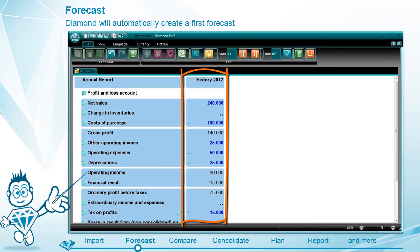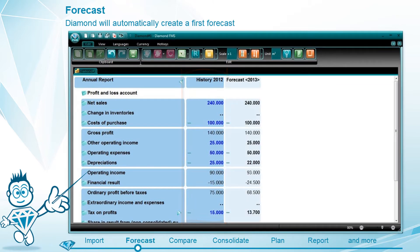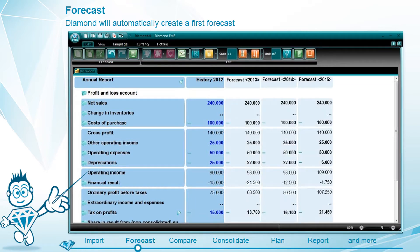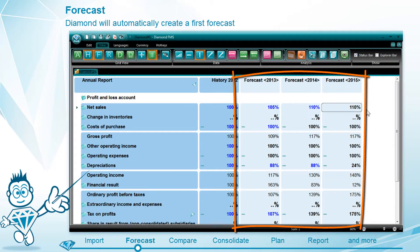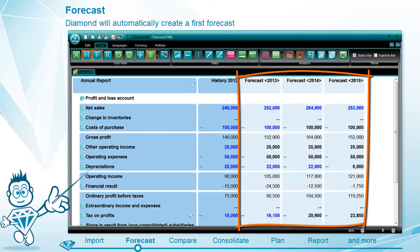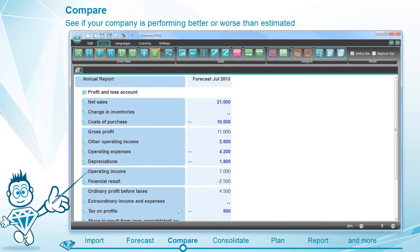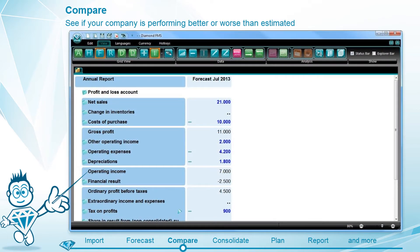Based on these figures, Diamond will automatically create a first forecast. Consequently, this forecast can be fine-tuned easily. After you have finalized the forecast,